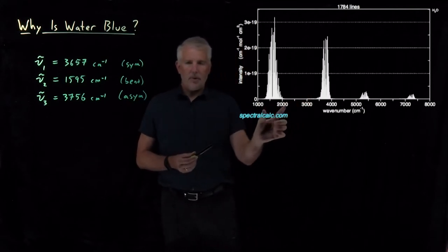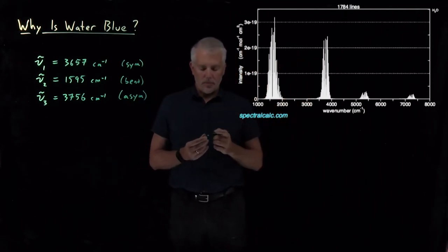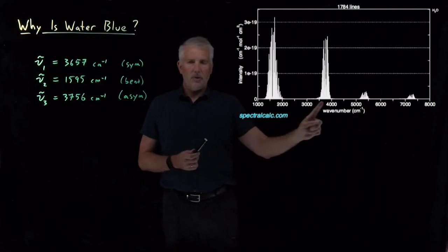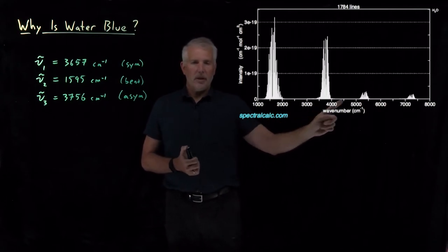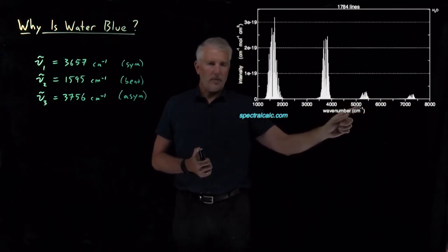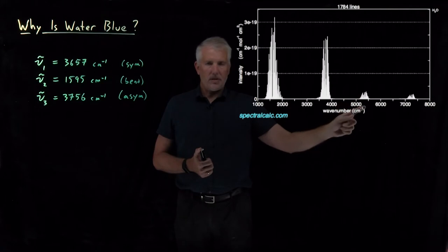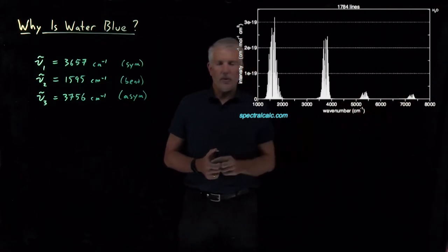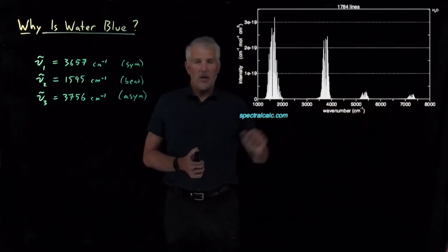We've seen the bending mode absorbs around here, so this absorption is nu sub 2. Here's nu sub 1 and nu sub 3, a little above 3,500 wave numbers. These peaks, however, water also absorbs at frequencies of 5,000 and some wave numbers, a little above 7,000 wave numbers. And what those are, are the overtones.